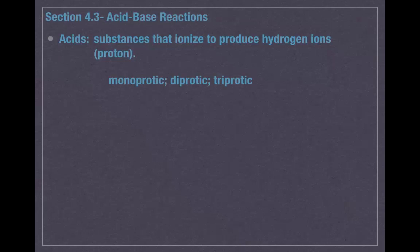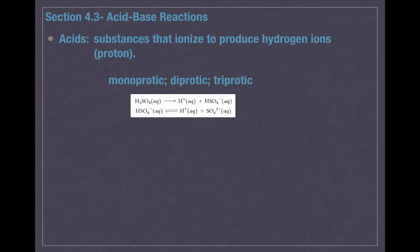Acids can be described as either monoprotic, diprotic, or triprotic. Mono means one, di means two, tri means three — that's how many protons or hydrogens can be released from the acid. For example, sulfuric acid is a diprotic acid. When sulfuric acid loses that one proton — that one hydrogen ion — it produces H+ and HSO4 with a negative one charge. Then HSO4 can lose another proton to become H+ and SO4 two minus.